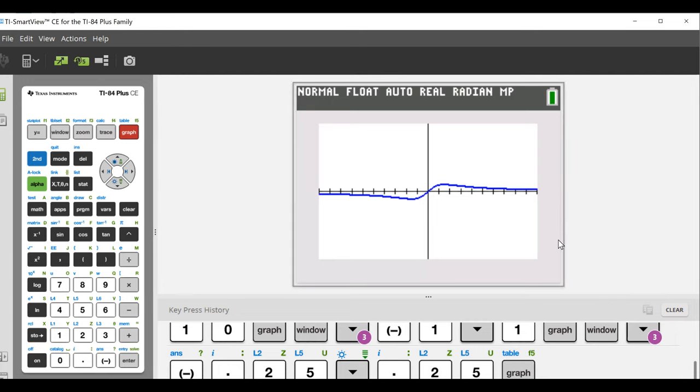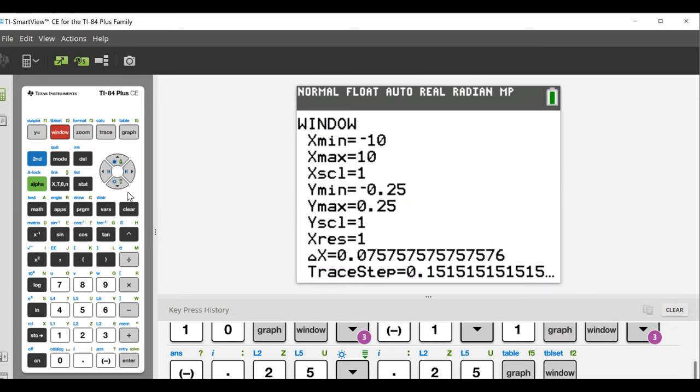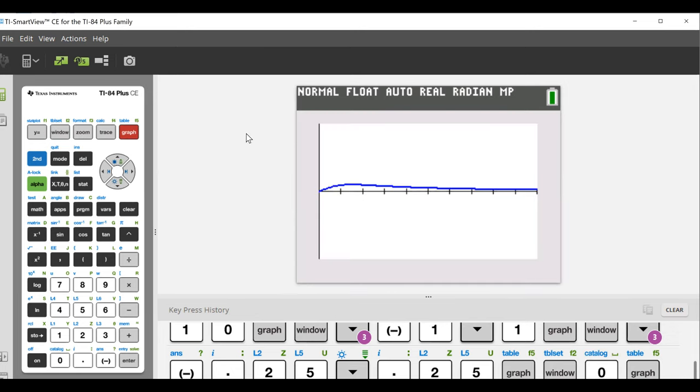And finally, we're seeing something we can make sense of. X has to be positive. X is the time since the drug is administered. It doesn't make sense to talk about that being negative. Our X minimum can be zero. And here's the curve.